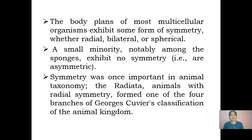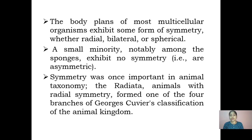The body plans of most multicellular organisms exhibit some form of symmetry — it could be radial, bilateral, or even spherical — whereas a small minority, mostly sponges, exhibit no symmetry; they are asymmetric in nature because of their irregularity in size. Symmetry was once important in animal taxonomy; the radiata animals with radial symmetry formed one of the four branches of George Cuvier's classification of the animal kingdom.